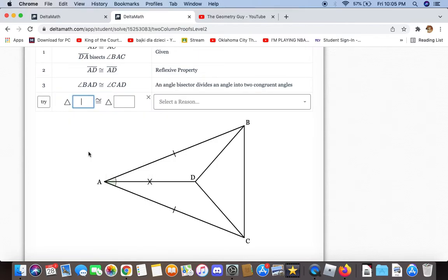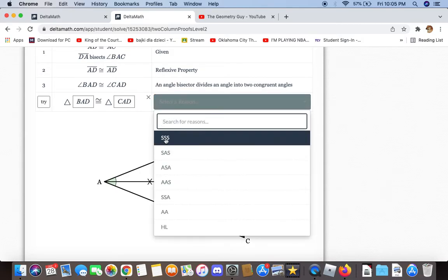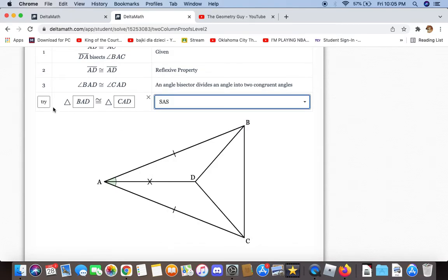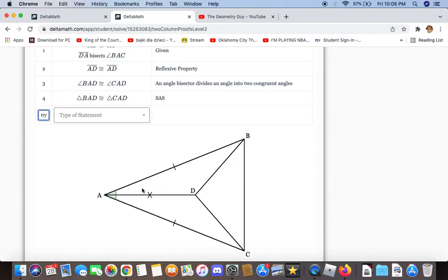We have enough information to say that triangle BAD and triangle CAD are congruent to each other, and the reason for that is side-angle-side.